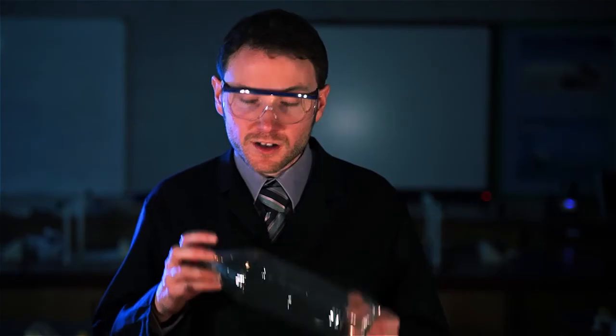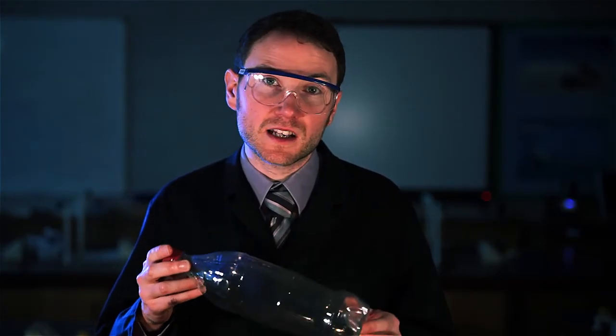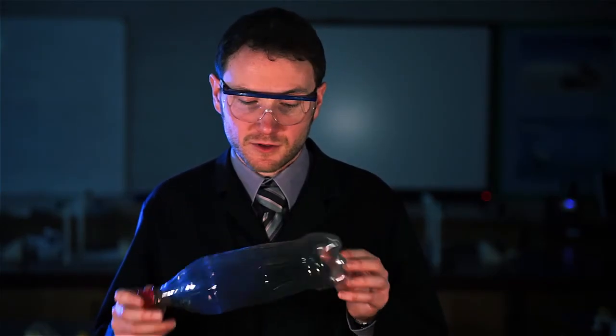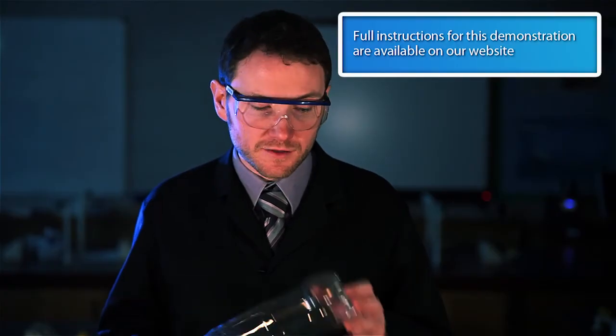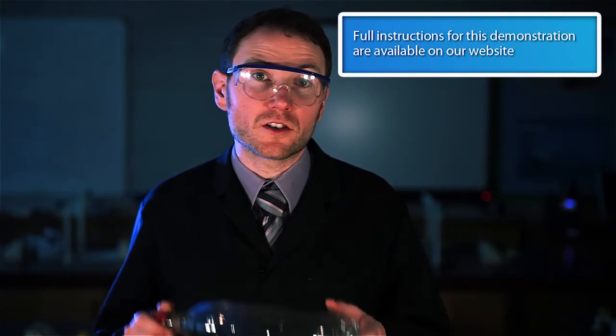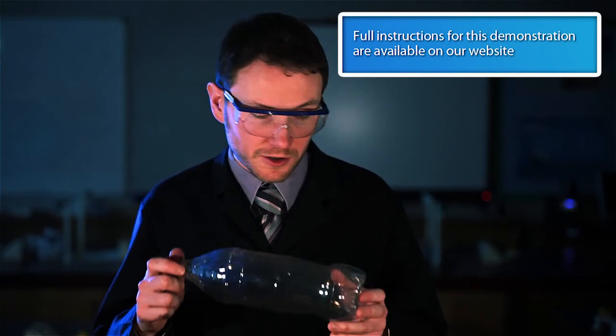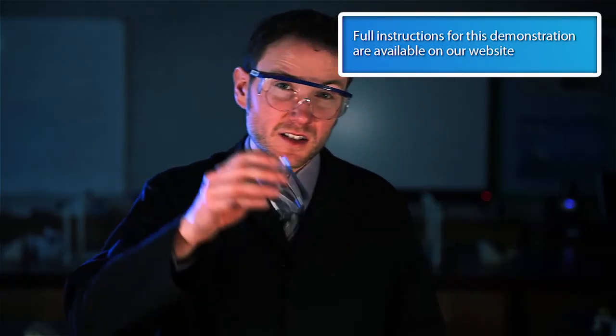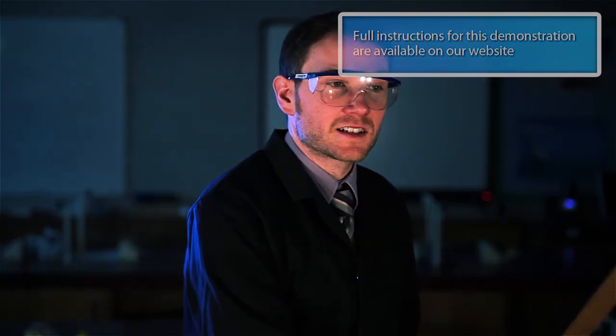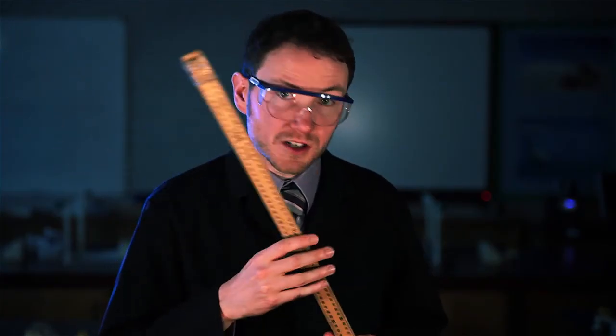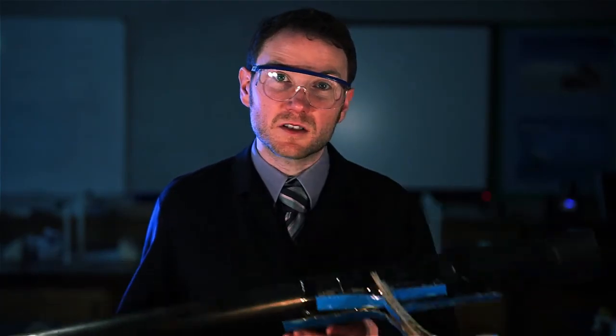So you're going to need a one or one and a half litre carbonated PET drinks bottle, which is going to be our rocket. Look out for the PET symbol on the bottom or a number one inside the recycling logo. You're also going to need about 6ml of ethanol and a meter ruler to which you can attach a splint, and a section of guttering which is going to act as a ramp for us. Now we've attached some cardboard to the bottom of this, but you can just prop it up on some books. About 20 degrees works just fine.